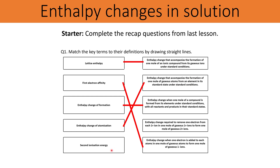And then finally for second ionization energy, which I didn't give you last lesson, you just needed to write an alteration of the definition for the first ionization energy. So we should have got the enthalpy change required to remove one electron from each 1 plus ion in one mole of gaseous 1 plus ions to form one mole of gaseous 2 plus ions.